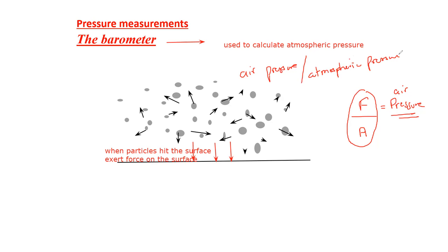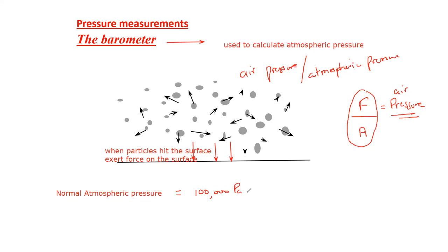The normal atmospheric pressure is equal to 100,000 Pascal, or 100,000 Newton per meter squared. This is the atmospheric pressure at sea level. However, atmospheric pressure is not constant throughout the Earth — it varies from place to place because it mainly depends on the number of particles and the temperature.